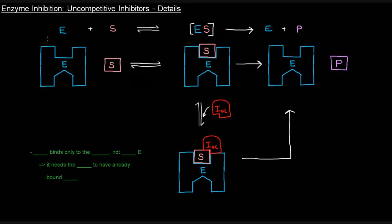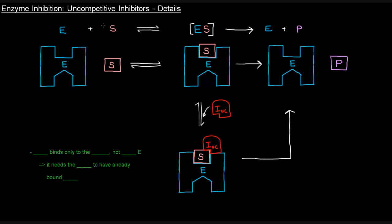In this video: enzyme inhibition, uncompetitive inhibitors. Same idea generally — enzyme plus substrate gives you enzyme-substrate complex, which gives you enzyme and product. Now what about an uncompetitive inhibitor? We saw that competitive inhibitors bind at the active site, and non-competitive inhibitors bind somewhere other than the active site.